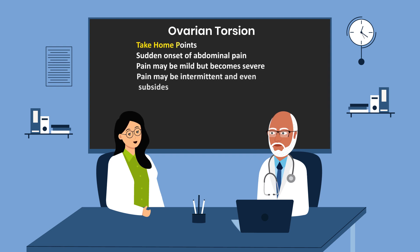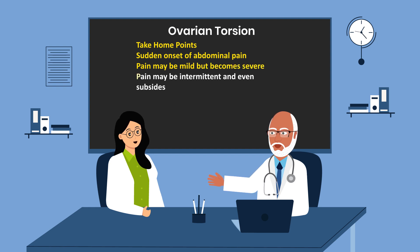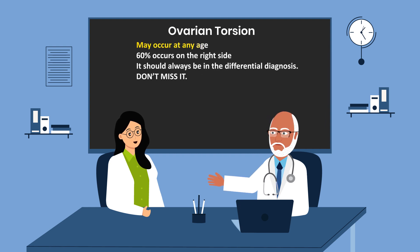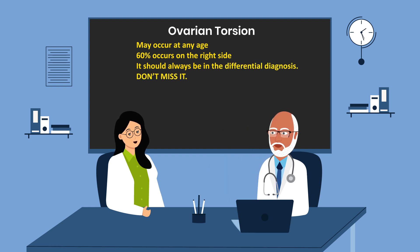Here are some take-home points. Sudden onset of abdominal pain should raise concern. The pain may be mild but becomes severe eventually. Pain may be intermittent and even subsides because of detorsion. Torsion may occur at any age. 60% of torsion occurs on the right side. It should always be in the differential diagnosis. Don't miss it.